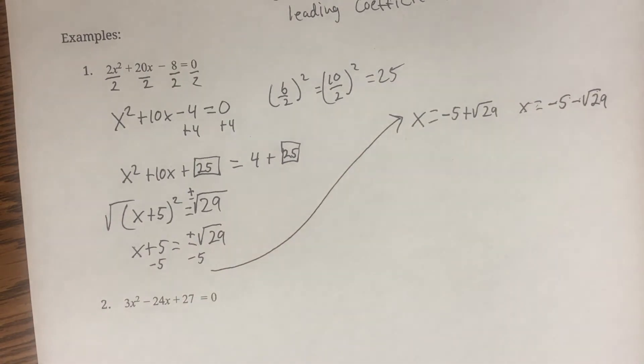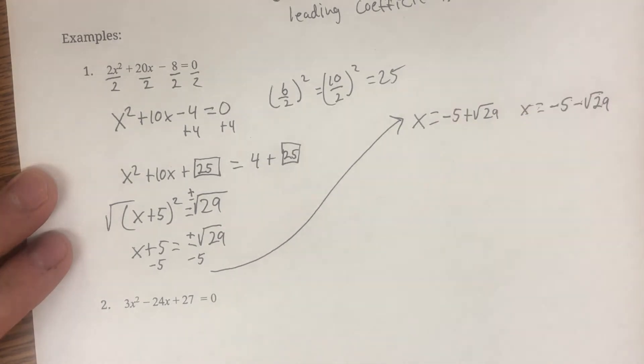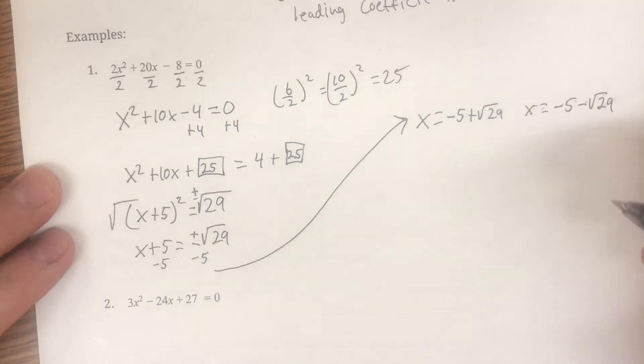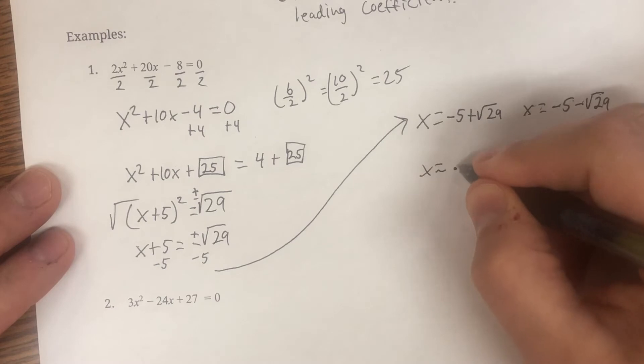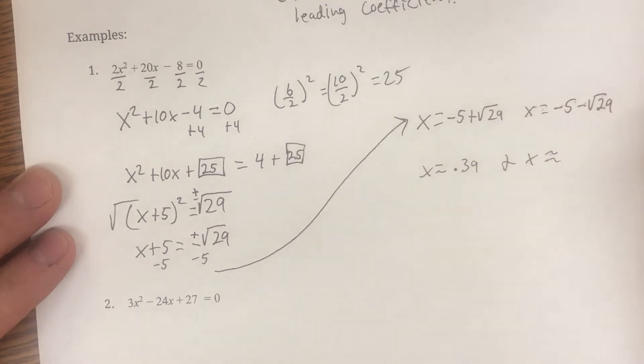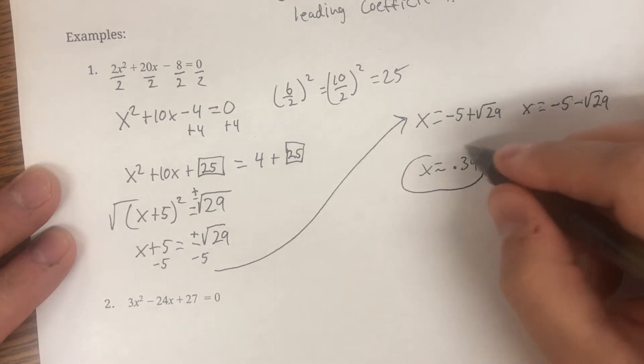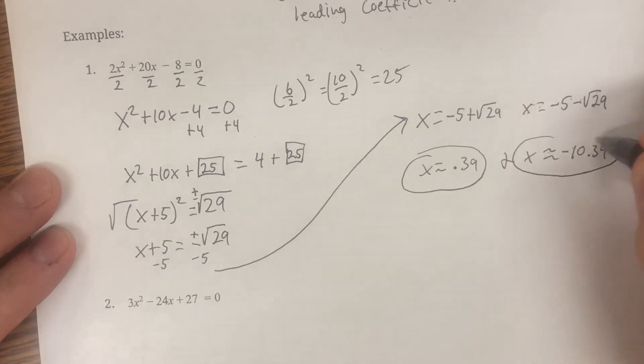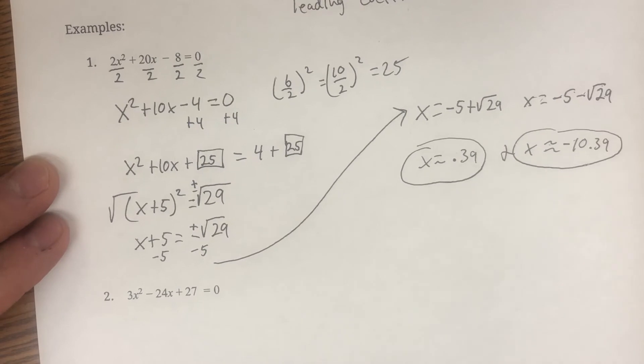So x is equal to negative five plus the square root of 29, and our second is negative five minus the square root of 29. And now at this stage, type those into your calculators. Make sure you close the parentheses on the square root, depending upon what calculator that you're using. And we will get x to equal approximately 0.39, and x is also equal to approximately negative 10.39.